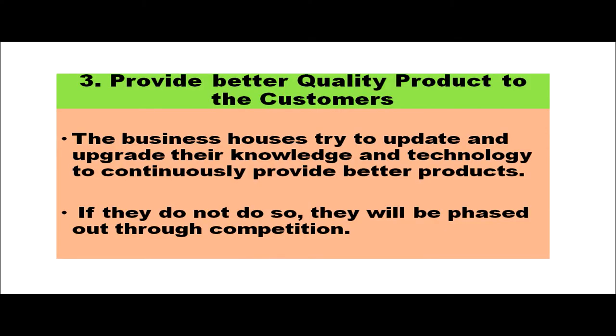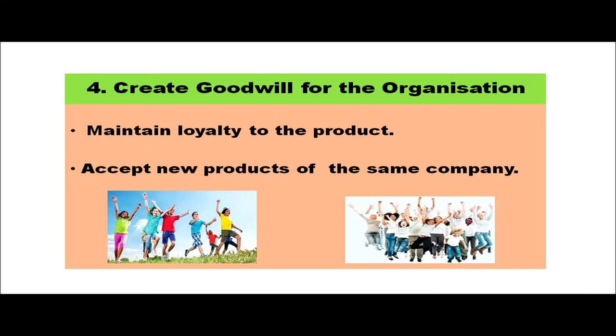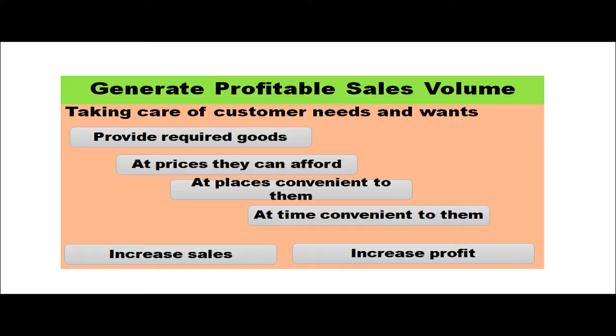Another objective is to provide better quality products. Business houses update and upgrade their knowledge and technology to continuously provide better products; if they do not, they will be phased out by competition. Marketing also aims to create goodwill for the organization, maintaining customer loyalty, helping consumers accept new products of the same company, and generating profitable sales volume.